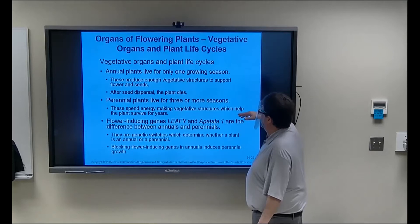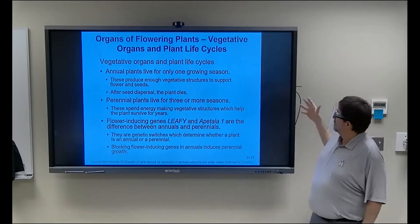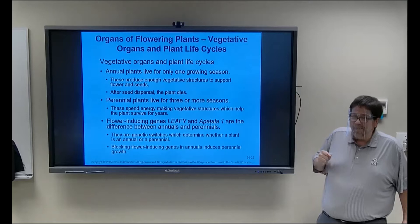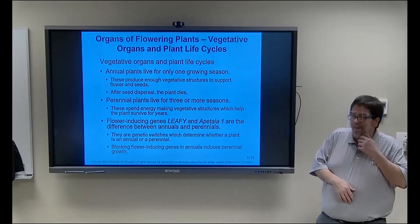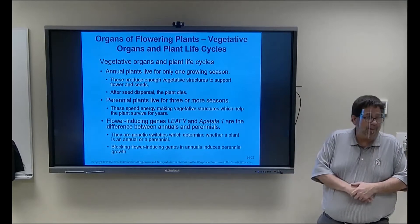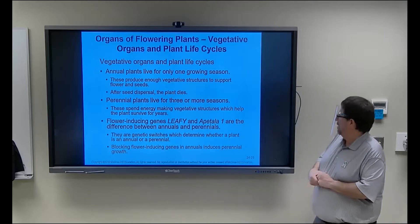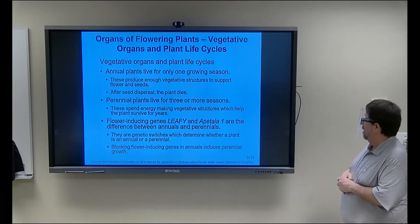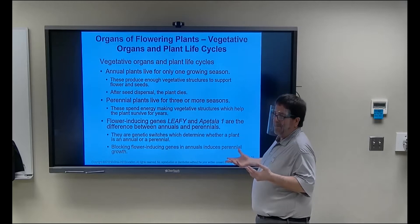Annuals live for one year — you plant corn and harvest it in 120 days. Perennials come back every year — apple trees flower every year. Perennials can be planted once and they keep flowering. Annuals can actually be converted into perennials by knocking out two specific genes, so the difference between annuals and perennials comes down to one or two genes that control flowering.